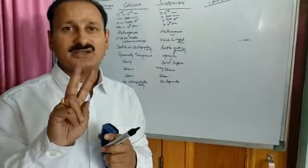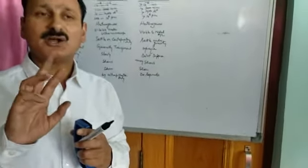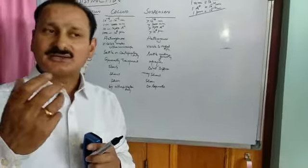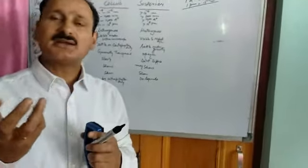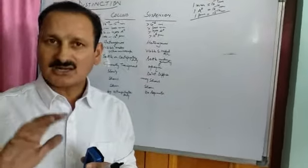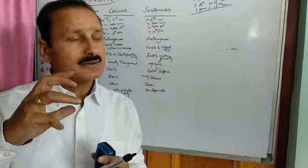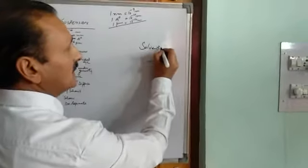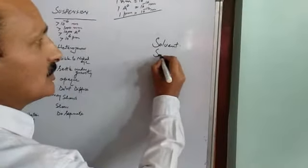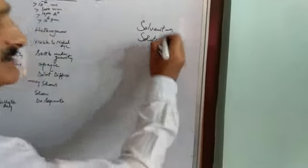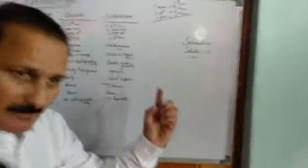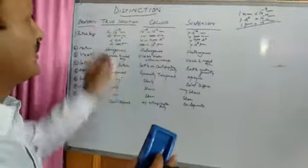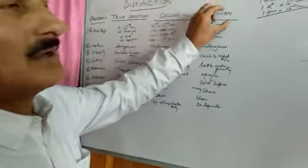Suppose we have binary components — binary solutions or binary mixtures. By binary mixtures we mean those which have only two components. Now, in these binary mixtures, one component is taken in larger quantity — that component is termed as solvent — and the other component taken in smaller quantity is known as solute. So, solute and solvent combine to form solutions. We have three types of mixtures: true solution, colloid, and suspension.